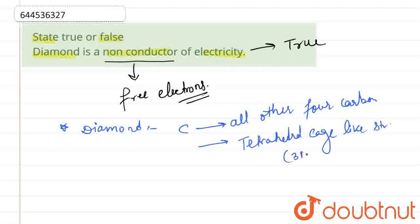And we can also say that it is a 3D structure having a hybridization of SP3. So when it does not have any free electrons, this simply means that diamond does not conduct electricity.